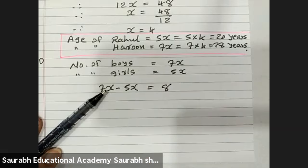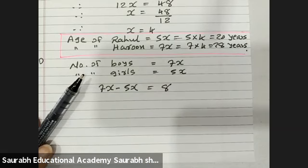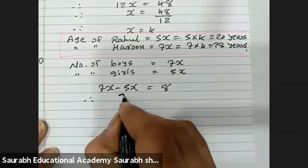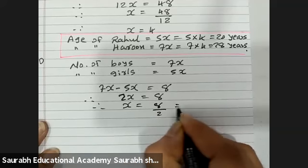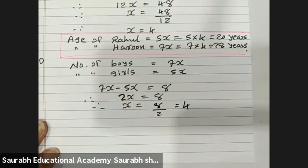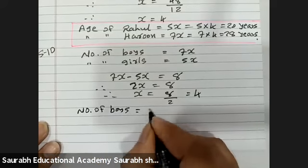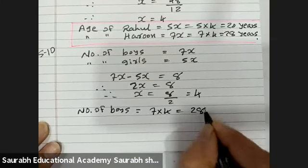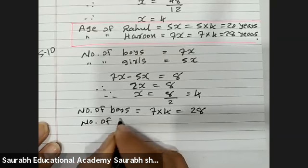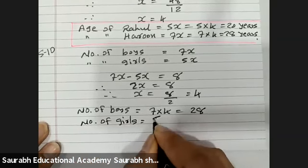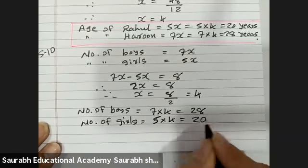7x minus 5x gives 2x, so 2x equals 8. Therefore x equals 8 divided by 2, which is 4. The number of boys is 7x, so 7 into 4 equals 28. The number of girls is 5x, so 5 into 4 equals 20.